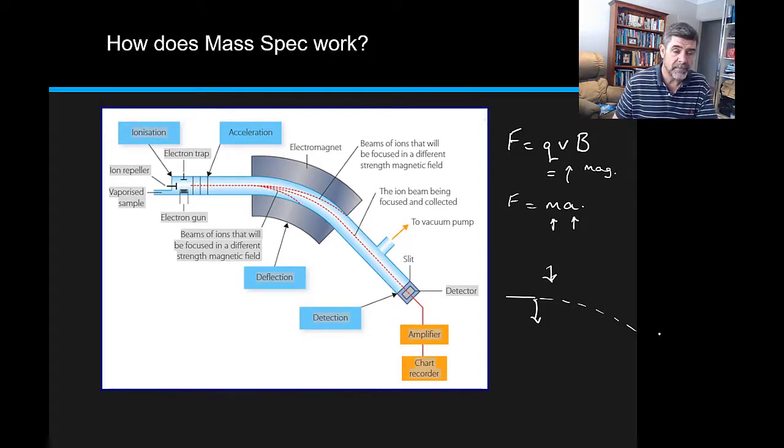Likewise, the particles in our mass spectra are also going to follow a curved path. If they are lighter particles, they'll experience greater acceleration and therefore they'll fall more quickly.